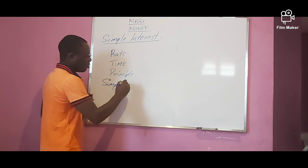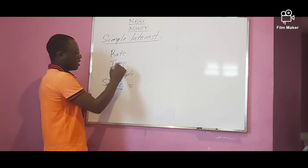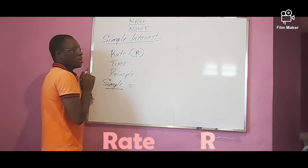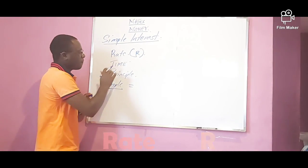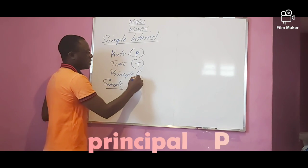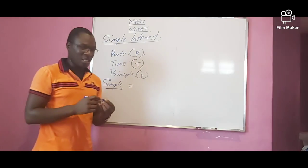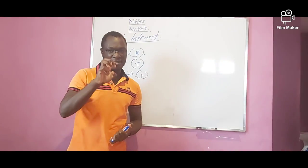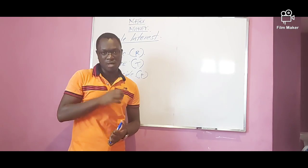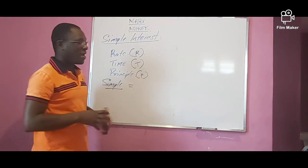Simple interest goes to the formula. Rate will be represented with R. Time is represented as T, and the principal is represented as P. Principal is the amount of money that is taken, borrowed, or given out — that is the principal.